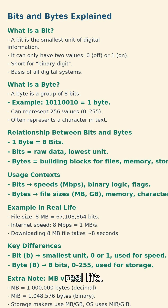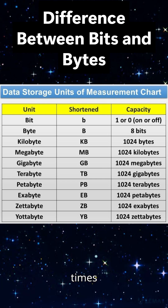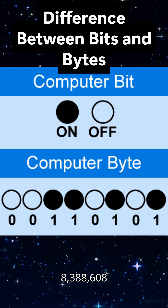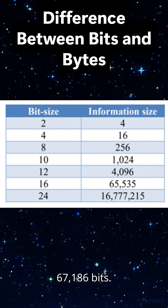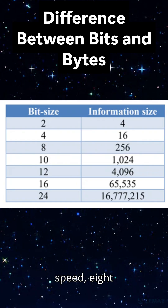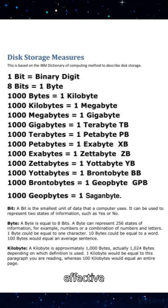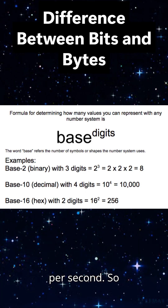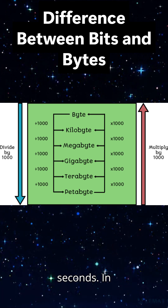Example in real life: suppose you download a file. File size: 8 megabytes. That's 8 megabytes × 8,388,608 bits = 67,108,864 bits. Internet speed: 8 megabits per second. Since 8 bits equals 1 byte, your effective download speed equals 1 megabyte per second. So downloading an 8 megabyte file takes about 8 seconds.